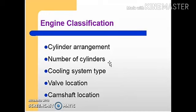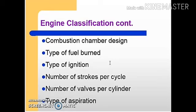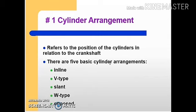Engine classification includes: cylinder arrangement, number of cylinders, cooling system type, valve location, camshaft location, combustion chamber design, type of fuel burned, type of ignition, number of strokes per cycle, number of valves per cycle, and type of aspiration.